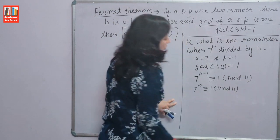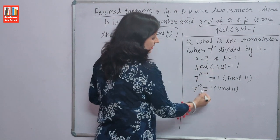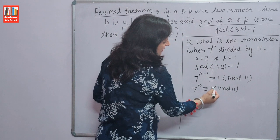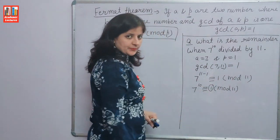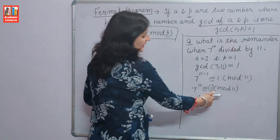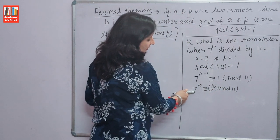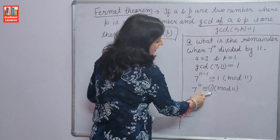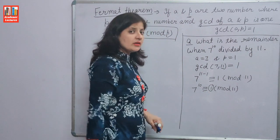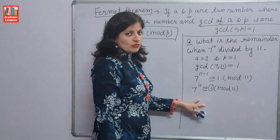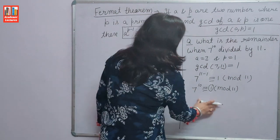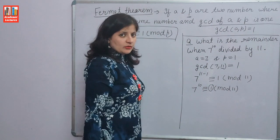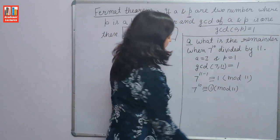The question is solved. The answer is 1. When 7 raised to the power 10 is divided by 11, the answer is 1. By using the definition of congruence, if 11 divides this number, the remainder will be the same — 1.